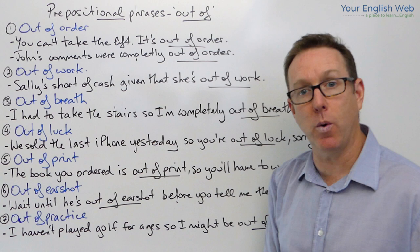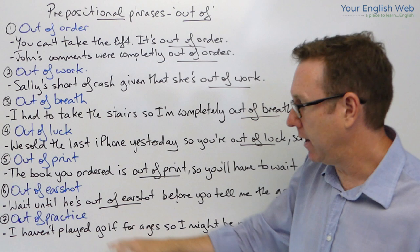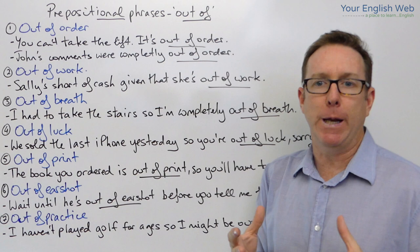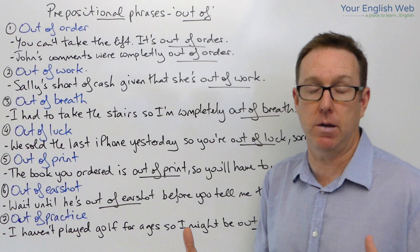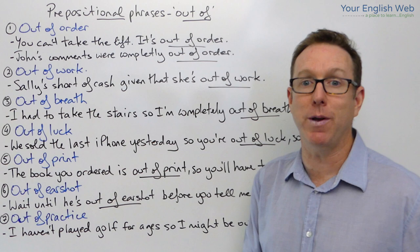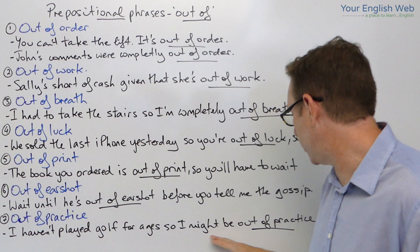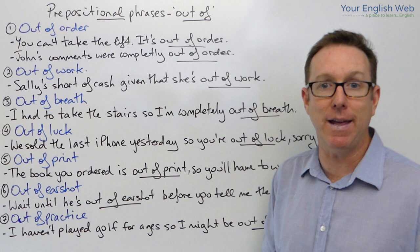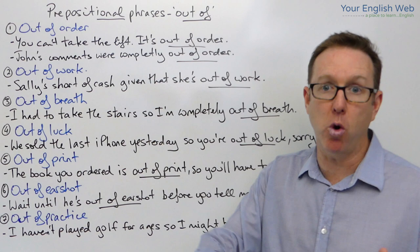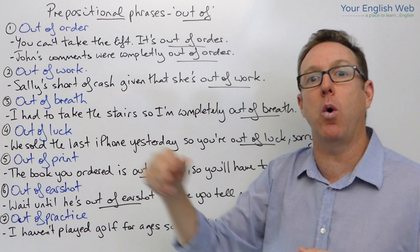The last one is 'out of practice'. Out of practice means that you are not going to perform to the best of your ability at a sport, for example, because you have not played it for a long time — you could be a little bit rusty. For example: 'I haven't played golf for ages, so I might be out of practice,' meaning that you might not play as well as you should if you had been playing more consistently. If you play golf every day or every week you become quite good, but if you don't play for a while, you become out of practice.